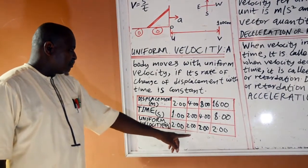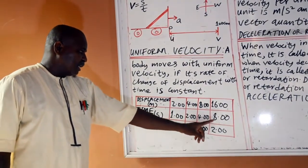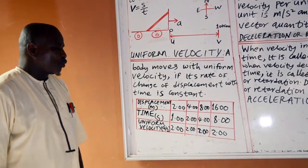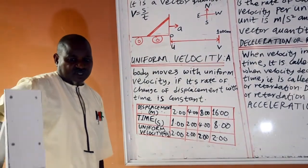Two meters per second here, two meters per second here, two meters per second here, and two meters per second here. They are the same thing, constant. That is what we mean by uniform velocity.